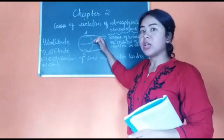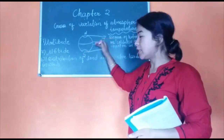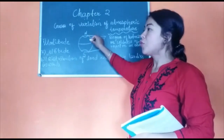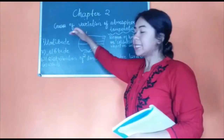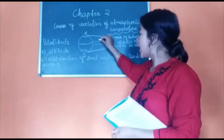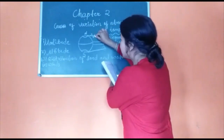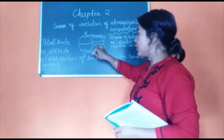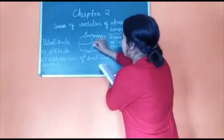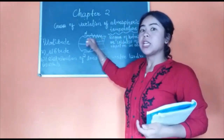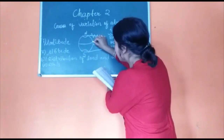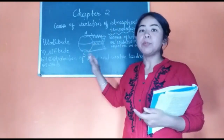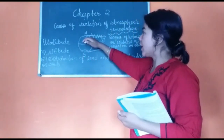Near the equator the sun rays are falling vertically — these are the direct rays of the sun. Whereas towards the poles the sun rays are not vertical; they are slanting. If you compare the distance covered by these two rays, the rays traveling towards the poles have to travel a longer distance compared to the rays traveling towards the equator. The rays reaching the equator are shorter, concentrated to a small area, and direct, so this area gets heated up faster.